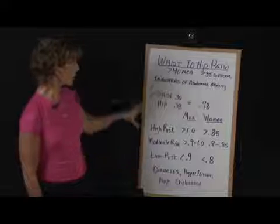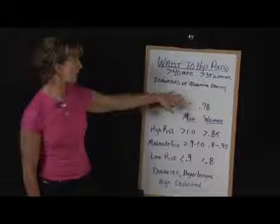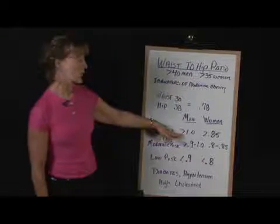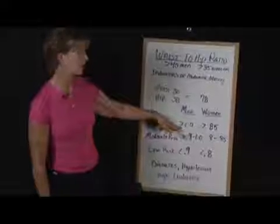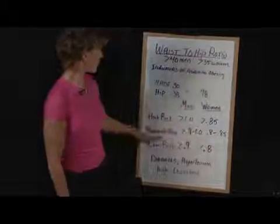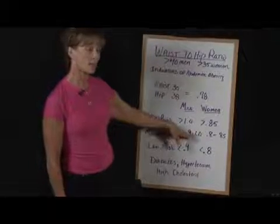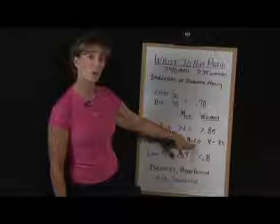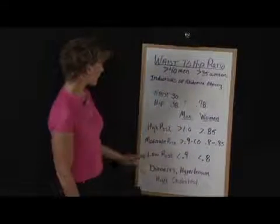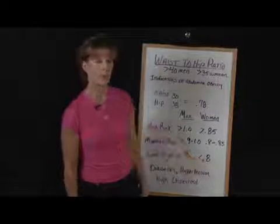When you do your calculations, dividing your waist by your hip and coming up with a ratio: high risk is men greater than 1.0, women greater than 0.85. Moderate risk is men at 0.9 to 1.0, and women at 0.8 to 0.85. Low risk for men is lower than 0.9, and lower than 0.8 for women.